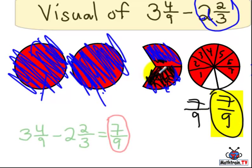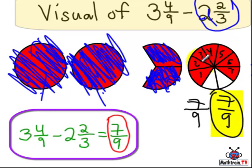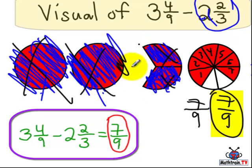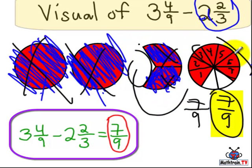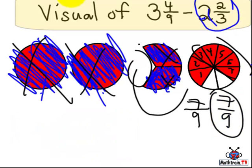I had 3 full pizzas and 4 ninths more. And then I ate 2 full ones. And then I had 2 thirds more. And then the leftover piece went together with the 4 ninths which I never even touched. And altogether that equals 7 ninths. I hope that helps. Thank you very much. And bye-bye for now.